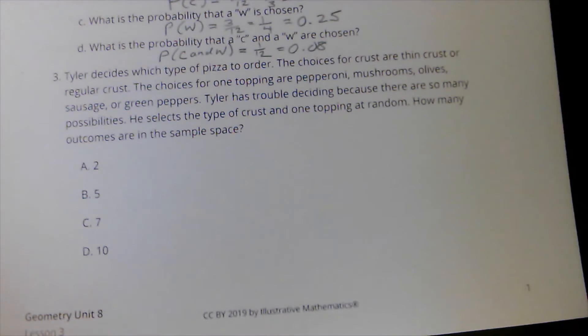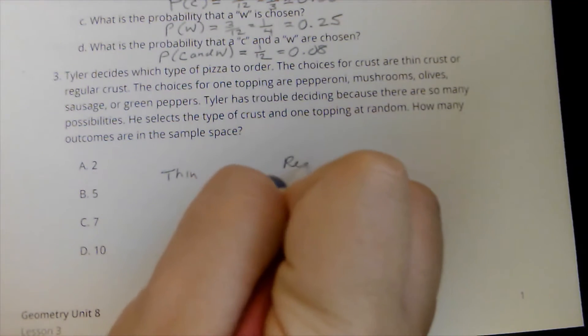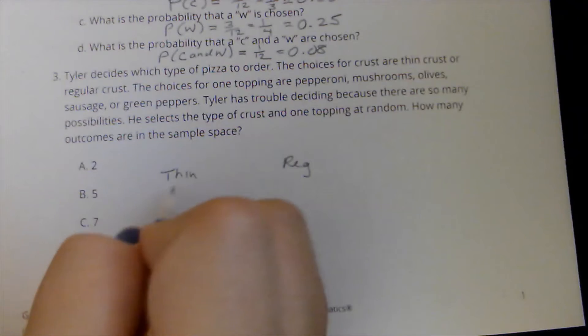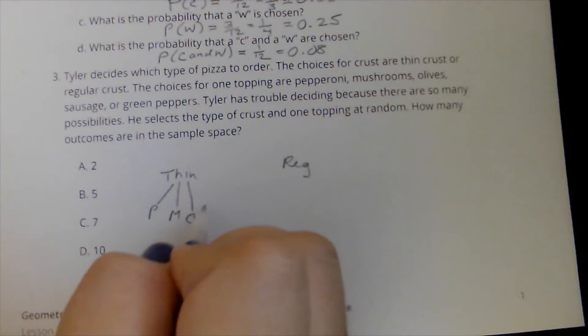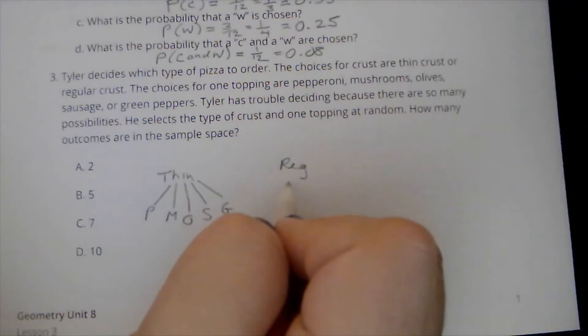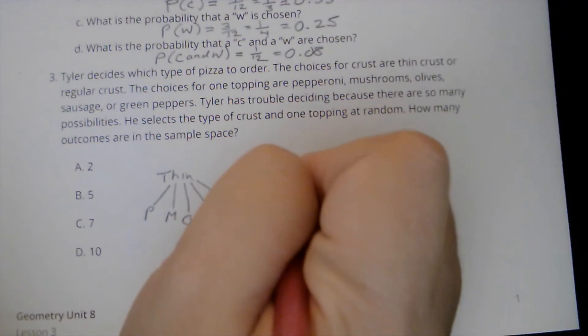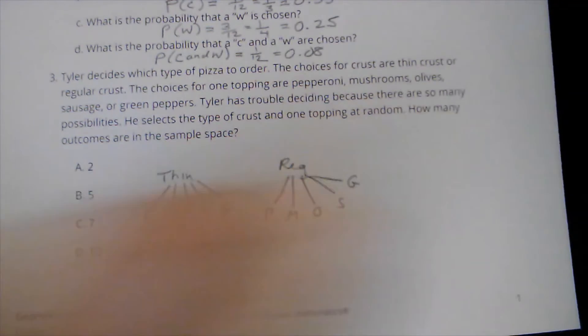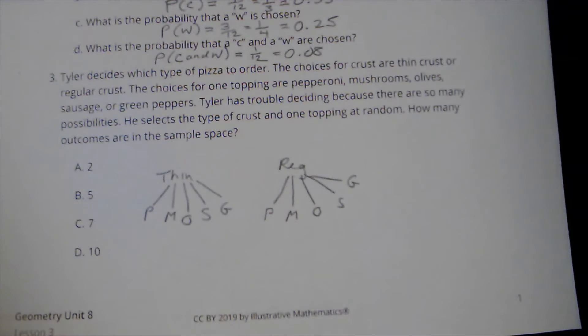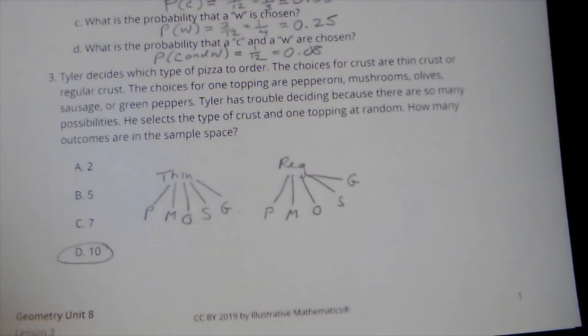This one might be a little easier to do with a tree diagram. We can say our options are thin crust or regular crust. And whichever one we choose, we're going to be choosing from pepperoni, or mushrooms, or olives, or sausage, or green peppers. And for this one, we're going to have the same options. We're going to have pepperoni, mushrooms, olives, sausage, green peppers. So for each of the crusts, I'm going to have one, two, three, four, five options. There's going to be a total of 10 options altogether.